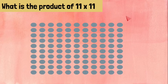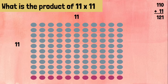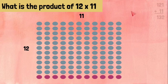11 times 11. We need 11 rows with 11 on each of the rows. Now we will take 110 blue ones and add 11 purple ones, which gives us 121. 12 times 11 means 12 rows with 11 in each row. We know our blue counters add up to 121, and we will add 11 more purple ones, which gives us 132.